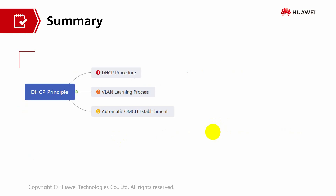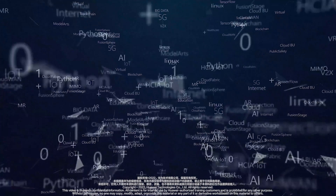That is the summary of Part 2. In this part we have discussed the DHCP principle and procedures, the VLAN learning process, and automatic OM channel establishment. Thank you and have a nice day.